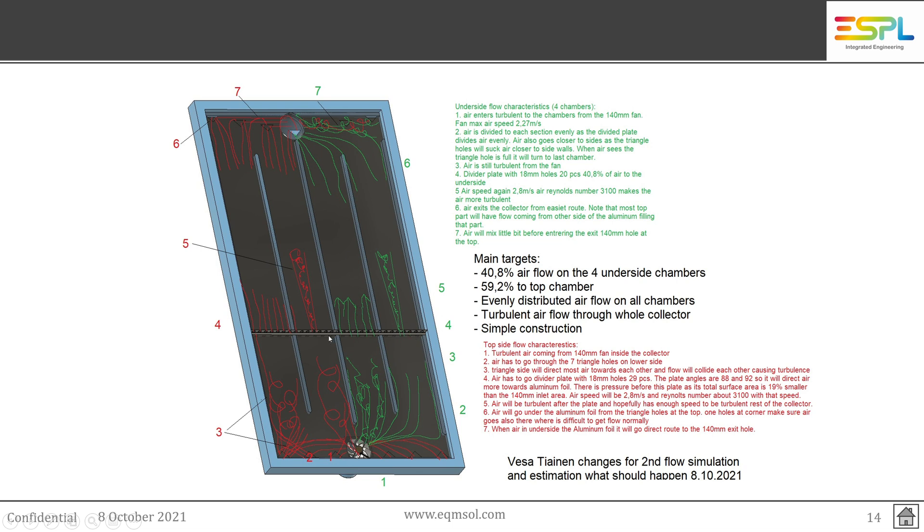Because there will be 20 holes, about 18 millimeter diameter on the underside, and on the top side 29 holes, so that's the numbers for how we will divert the air—how much air will go on which side.